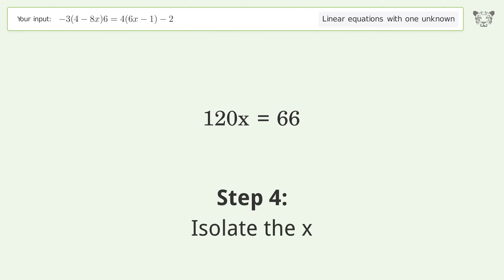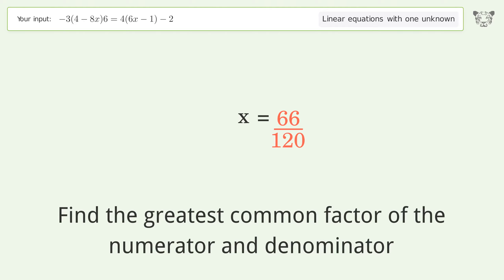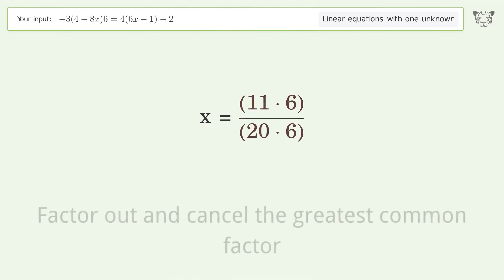Isolate the x by dividing both sides by 120. Simplify the fraction. Find the greatest common factor of the numerator and denominator. Factor out and cancel the greatest common factor.